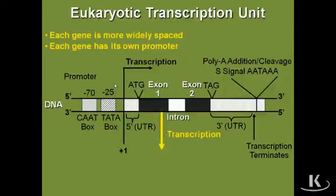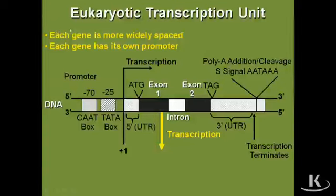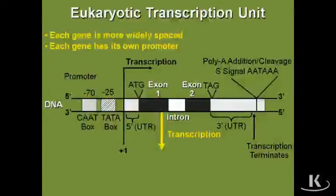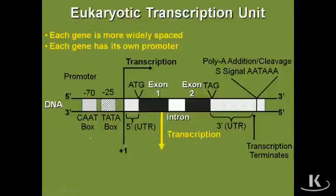Each gene is going to be more widely spaced in eukaryotic messenger RNA than in prokaryotes. That's because the eukaryotic genome is much bigger, so it's spread out with lots of spacer DNA and perhaps enhancer DNA. The other key fact is that each gene is going to have its own promoter sequence. That's different from what we said about polycistronic messages, where more than one gene could be encoded on a single messenger RNA from the same promoter. That's not the case for eukaryotes — each gene has to have its own promoter. No polycistronic messages in eukaryotes.